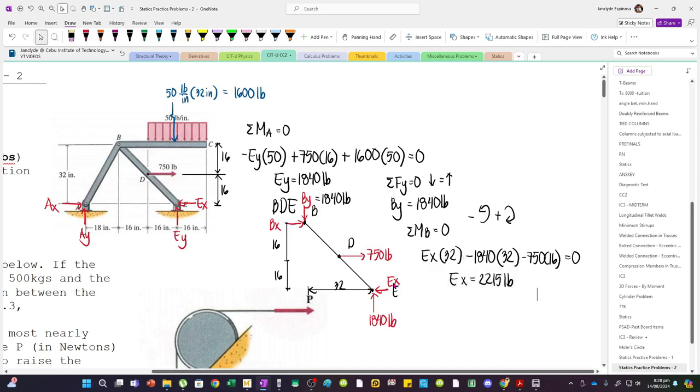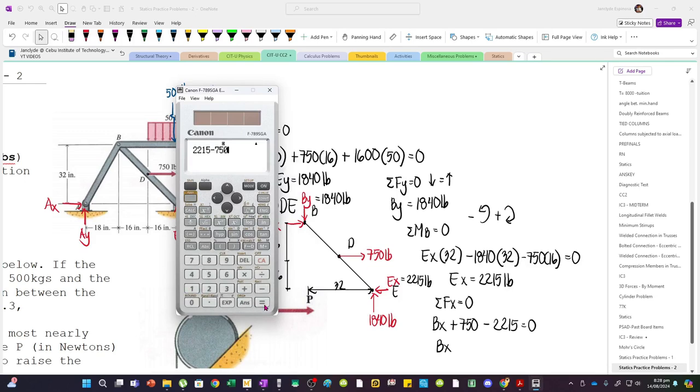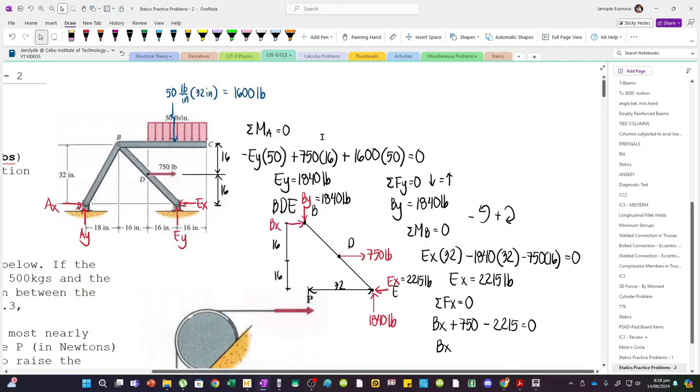And then, since we've solved EX, we can also solve BX. So, we can sum up forces horizontal. So, we have BX going to the right. So, positive. And then, plus 750 minus EX. So, minus 2215. Set to 0. So, BX is 2215 minus 750. So, we have 1465 pounds.